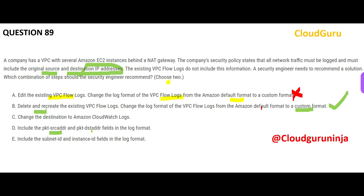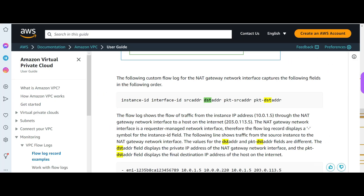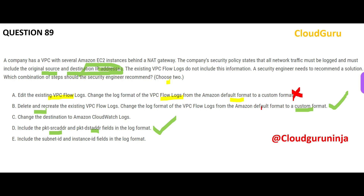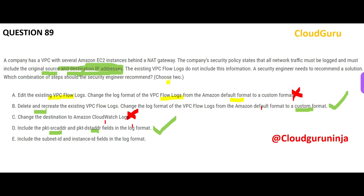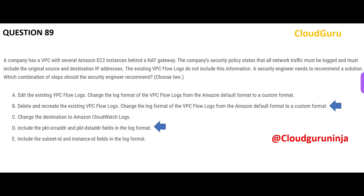You also need to ensure original source and destination IP addresses are captured. The pkt-srcaddr field gives you the source address, and the pkt-dstaddr field gives you the final destination IP address — as the documentation confirms. So these two fields satisfy the requirement. Option C is wrong because the question is about VPC flow logs, not CloudWatch Logs — those are separate utilities. Option E is wrong because it captures subnet ID and instance ID, not source and destination IP addresses. So the two final answers are: delete and recreate with custom format, and include the pkt source and destination fields.